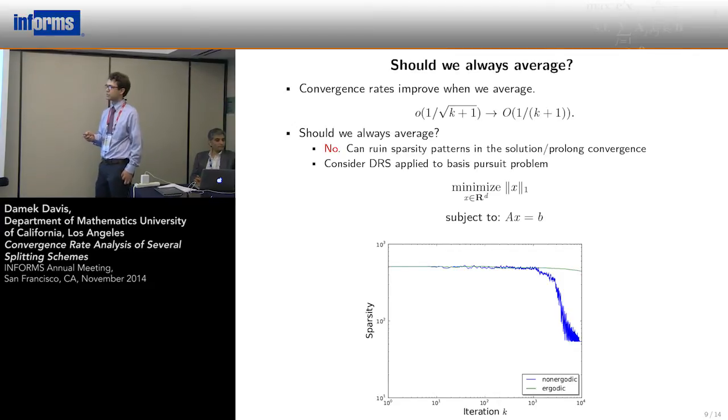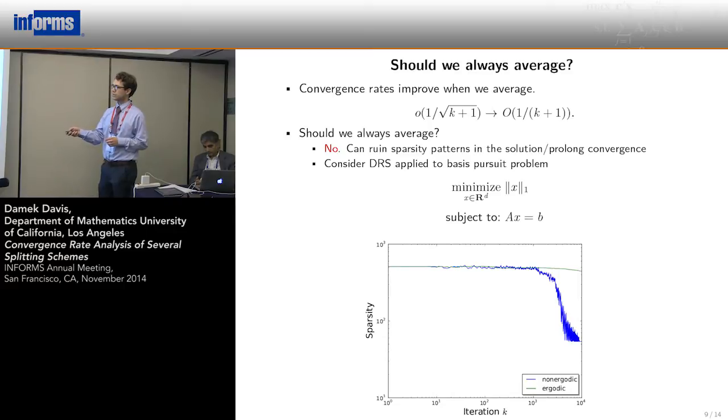Should we always average? My answer is no. The rates always improve from little o of 1 over square root of K+1 to big O of 1 over K+1. But in applications like machine learning, the objectives typically have a solution with certain structure you want to preserve, like sparsity or low rank. Here I'm trying to solve Ax = b subject to finding a sparse solution. If you look at the sparsity as the algorithm progresses, the non-ergodic iterate drops off at about 10^3, so it's pretty sparse. The ergodic iterate is still averaging in bad information from non-sparse iterates. So it's not always a good idea to average but it does improve the rate.